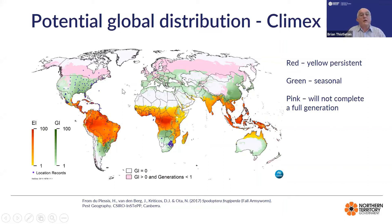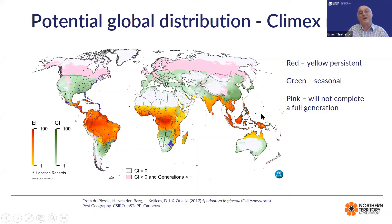This is a Climax model — a map produced in 2017 of where fall armyworm was expected to go. It's based on climatic data: rainfall, temperature, soil temperature, and those sorts of things. The orange is where it can complete its life cycle and stay year-round, the green is where it's seasonal, and the pink is where it can't complete a life cycle. In America it was already known to be in the south, and it moves up through in the summer right up through to Canada.